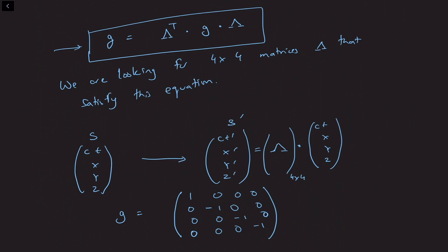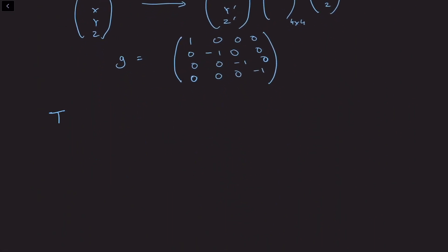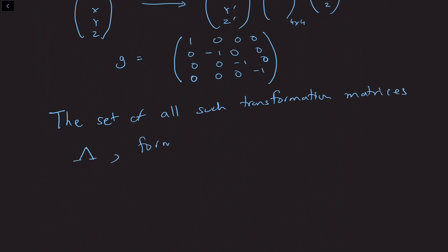Before we start looking for particular matrices lambda, I want to make a claim which we will justify: the set of all such transformations using lambda — that is, the set of all such transformation matrices lambda — form a group, and this group is called the Lorentz group.